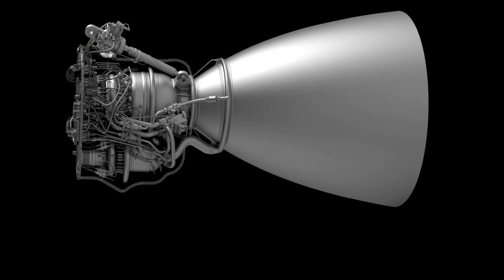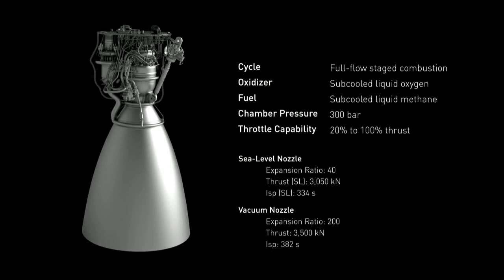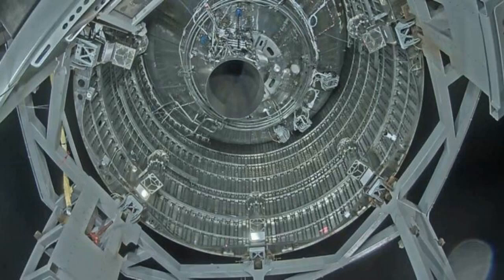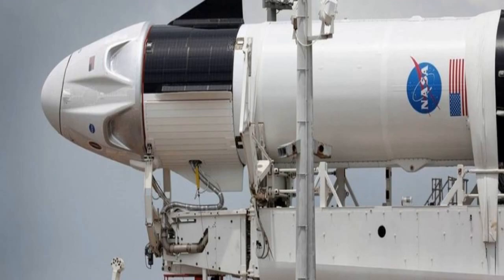The Raptor engine has several advantages over traditional rocket engines, such as higher efficiency, lower cost, greater reliability, and better performance in different environments. It can also throttle from 20% to 100% of its thrust, which allows for precise landing maneuvers and rapid reusability.